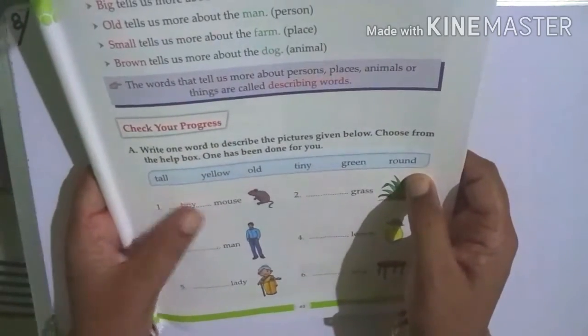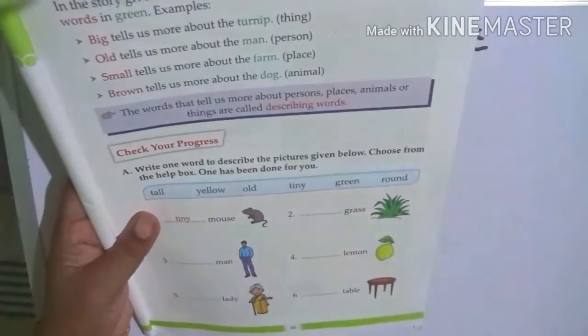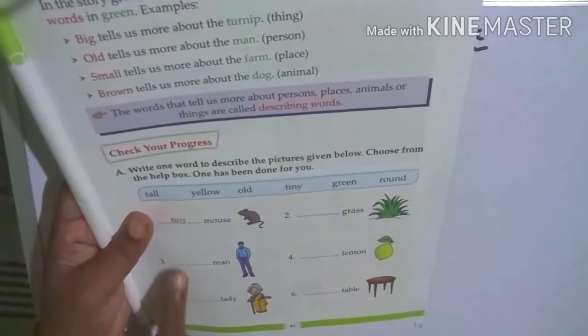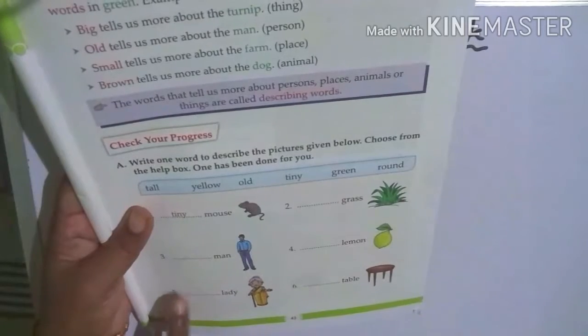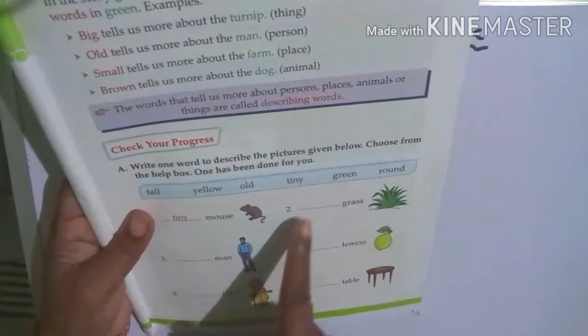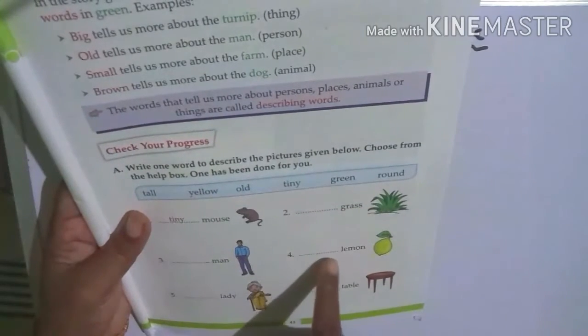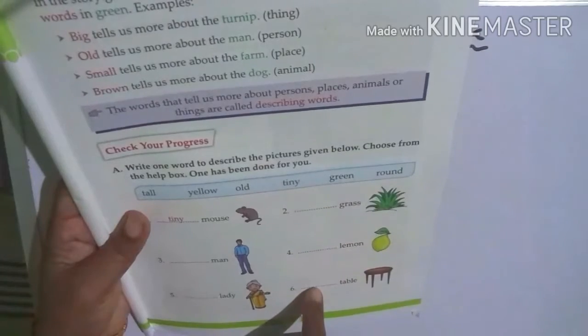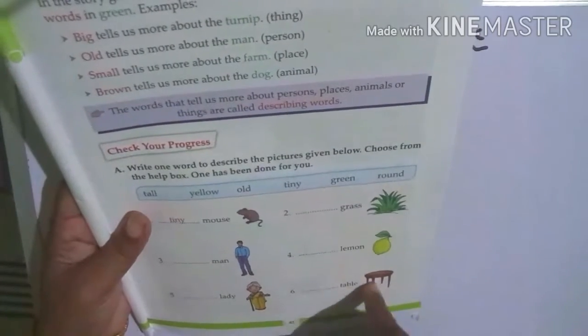Number one: tiny mouse. First one, tiny mouse. Tall man. Write here, tall man. Number five: old lady. Green grass. Yellow lemon. And round table.